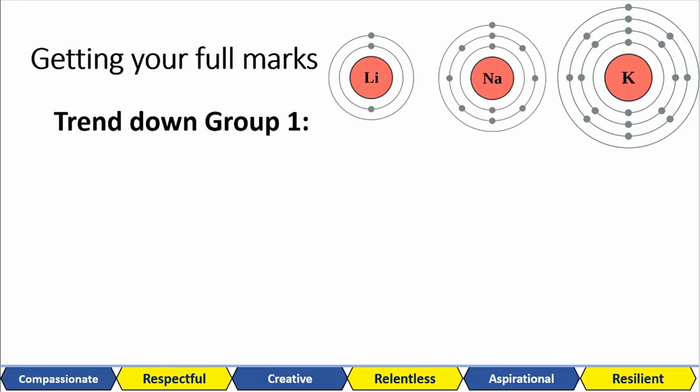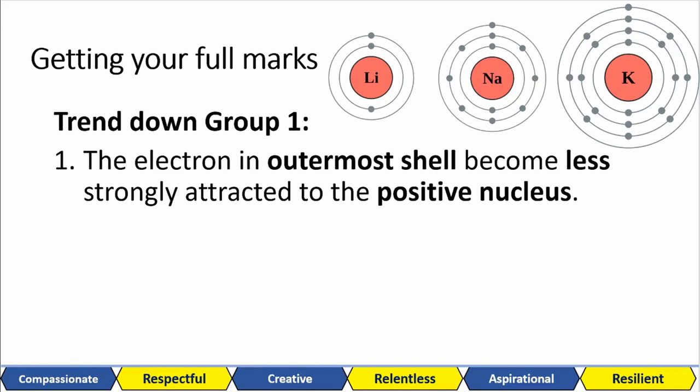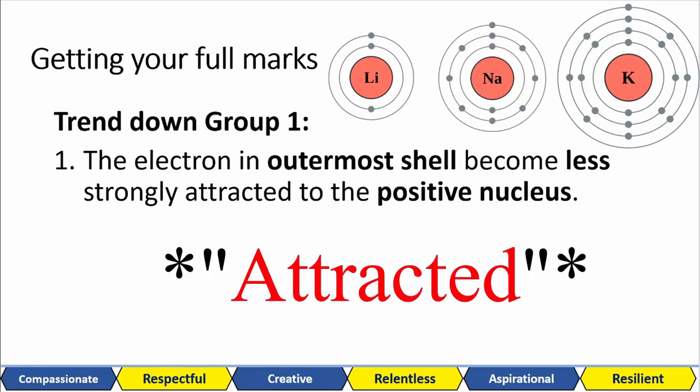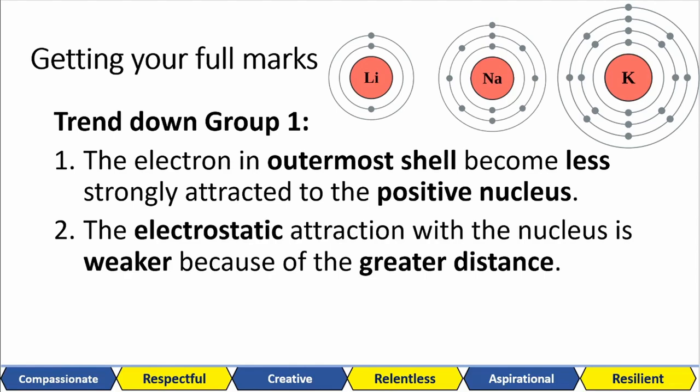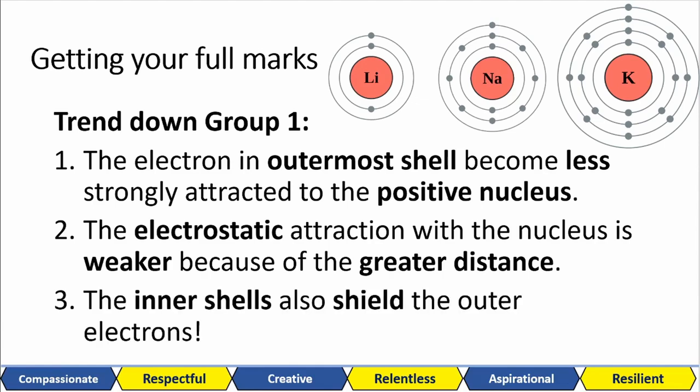If you're looking for those top marks though, make sure you can write out your answer like this. The electrons in the outermost shell become less strongly attached to the positive nucleus or you can say to the protons. The electrostatic attraction. So that force that's holding the electrons close to the protons is electrostatic. So the electrostatic attraction with the nucleus is weaker because of the greatest distance. Remember, the potassium atom is larger so the electrons are further away. And also, this is the last thing that students always forget. The inner shells also shield the outer electrons. That means that they're blocking the positive attraction, that electrostatic attraction from the nucleus.